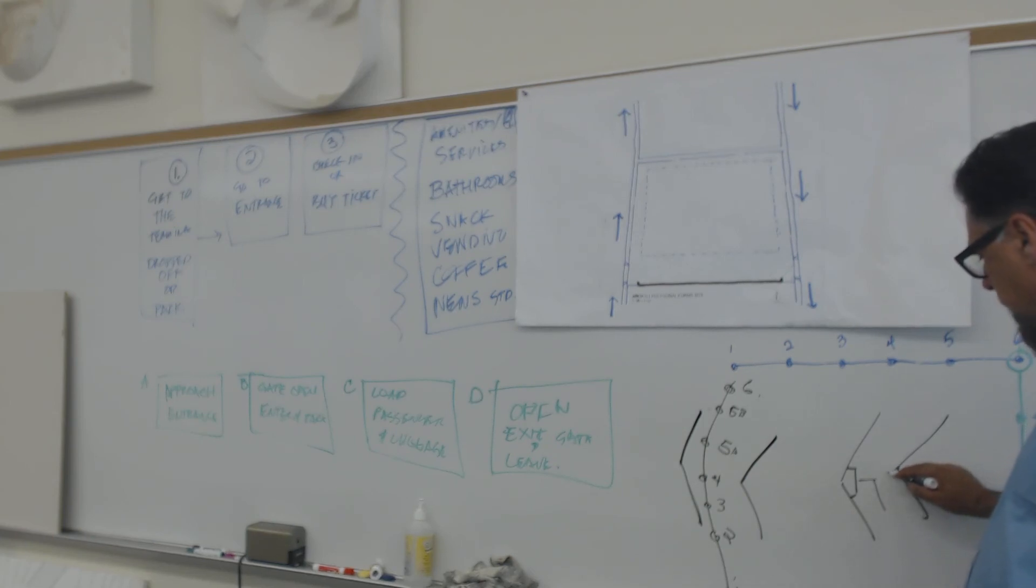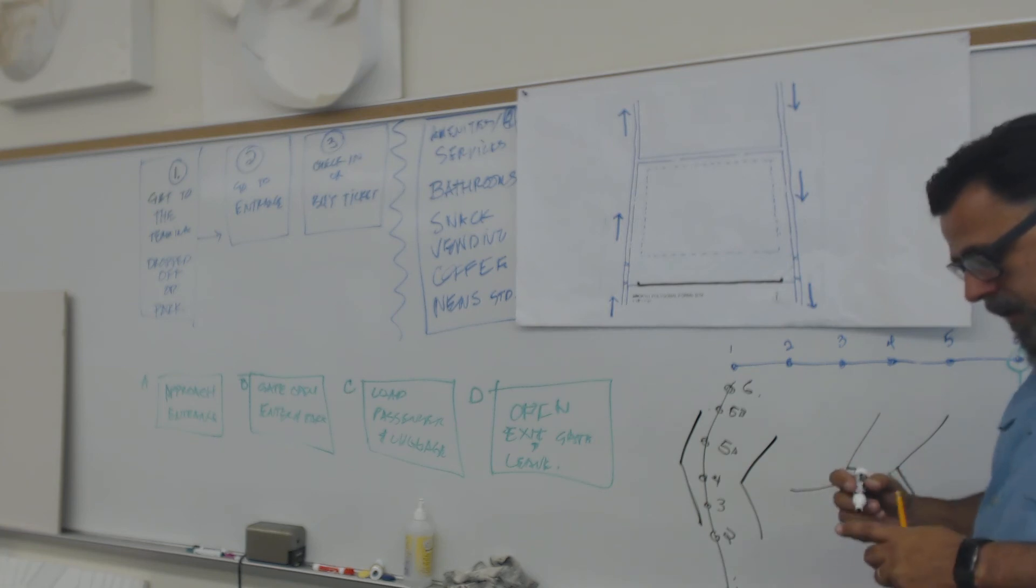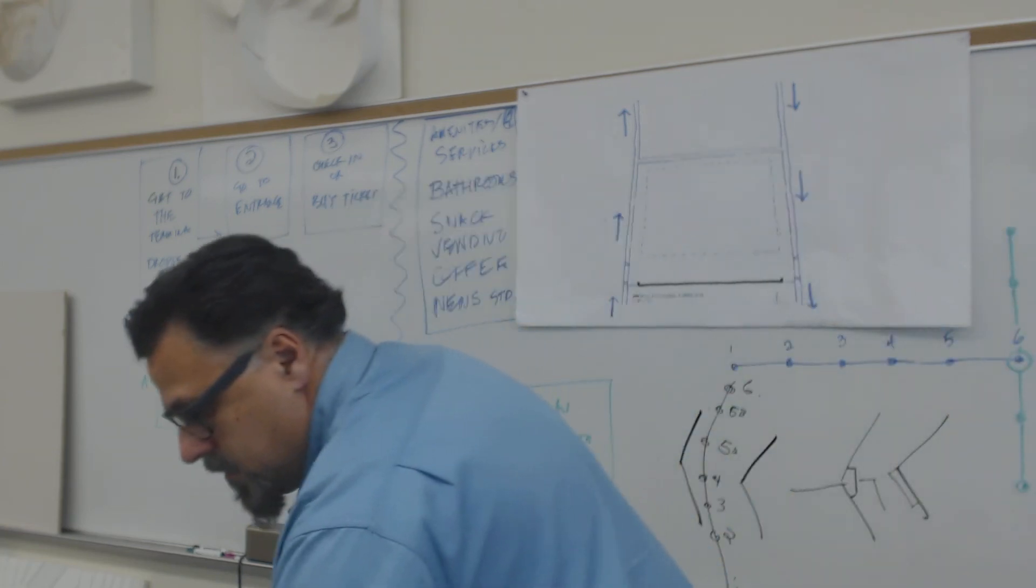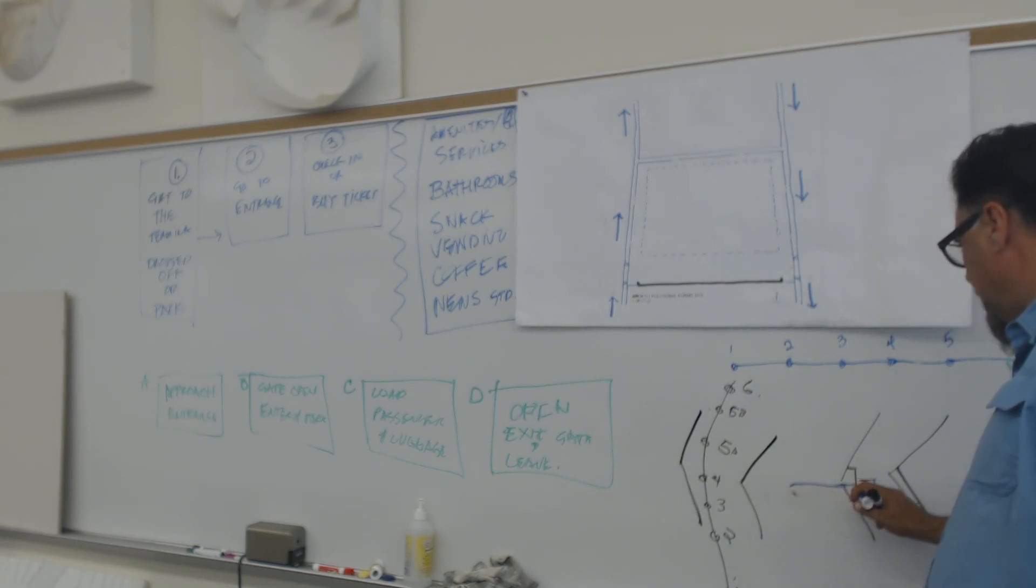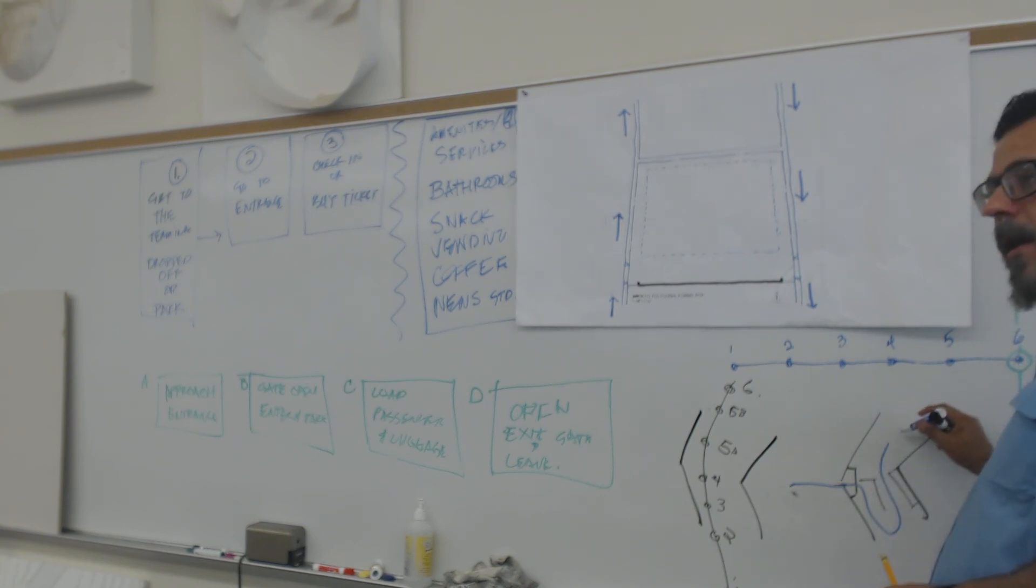Your amenities and stuff can be over on this side so that somebody would come in. Let me use a different color. Somebody would come in through the entrance, pass the ticket area. Then they would come back up this way, get to the waiting area here, and then finally go out to the buses.